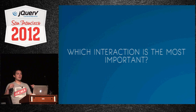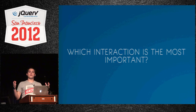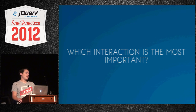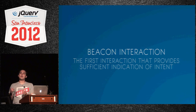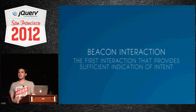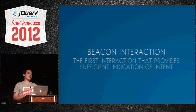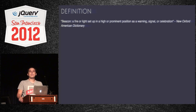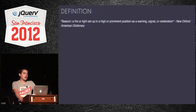Here's the crux of all of this: I've given you a bunch of indicators, but how do you use them? Which one is the most important? It's really hard to say — it's different in each situation. What you really want to look for is a beacon interaction: the first interaction that provides sufficient indication of intent. A beacon is a signal — the user alerting you that they're doing something and you can respond to it. It's a fire or light set up as a warning, signal, or celebration.